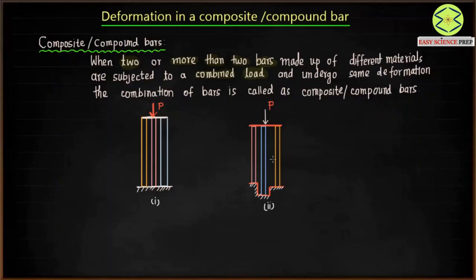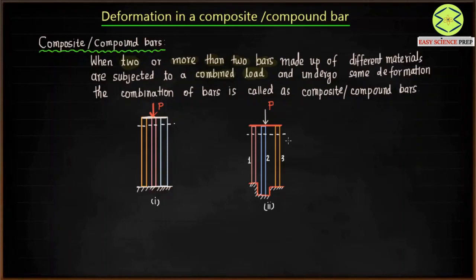In the second example, we have three bars of different lengths — bar one, two, and three each have different lengths. One end of each bar is fixed while the other ends are connected together, and a combined load P is applied. All three bars undergo the same deformation delta L, regardless of their different lengths.